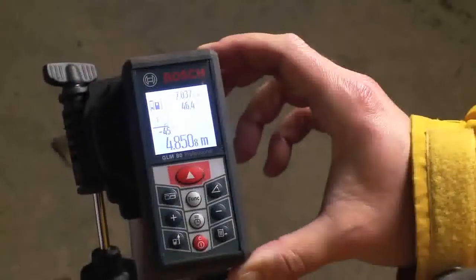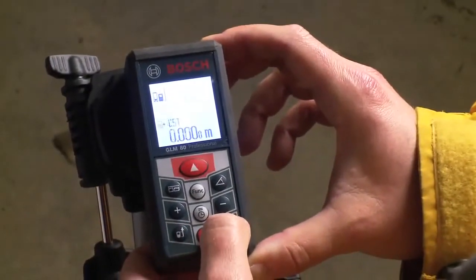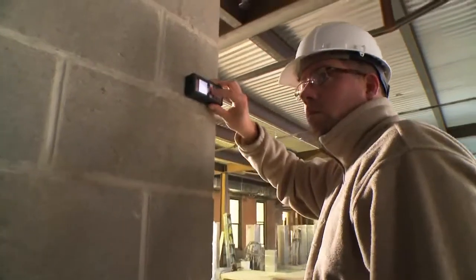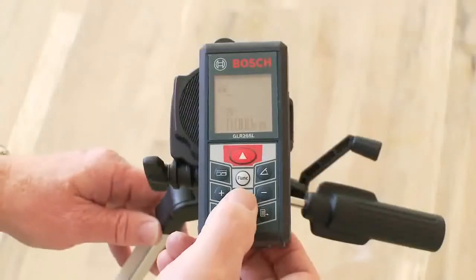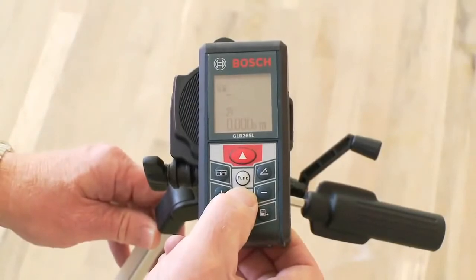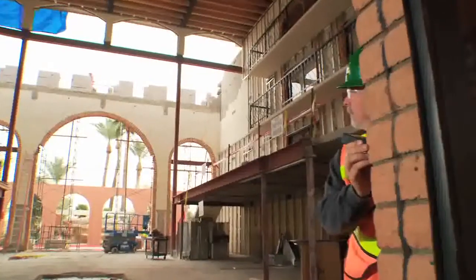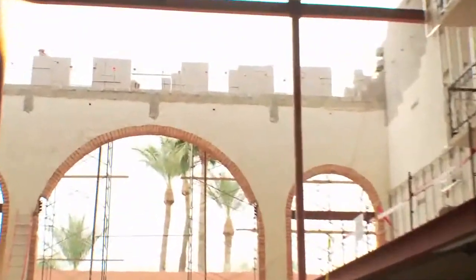This is the Bosch GLM-80 Laser Distance Measurer that is used for precise, smart measuring with 10 measurement modes. The GLM-80 is a smart tool that can measure at the speed of light with an accuracy of 1/16th inch and operation to a distance of 265 feet.